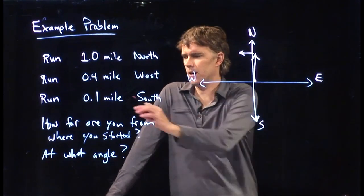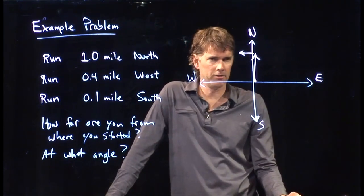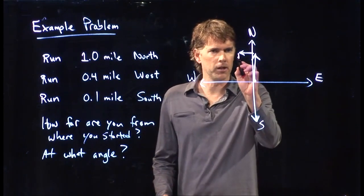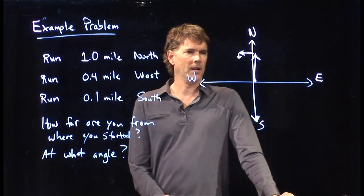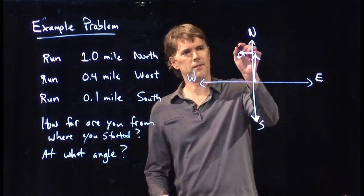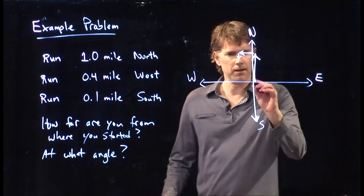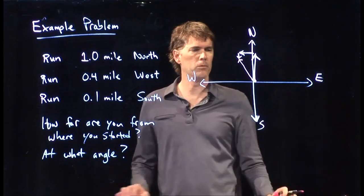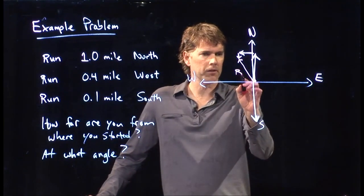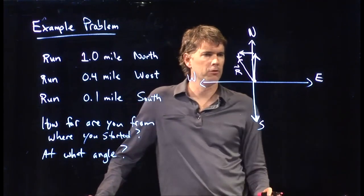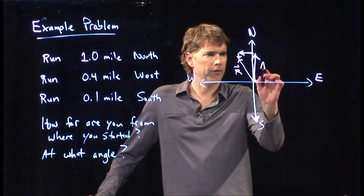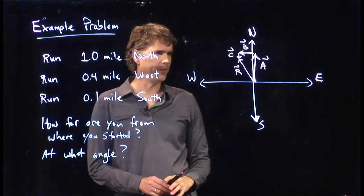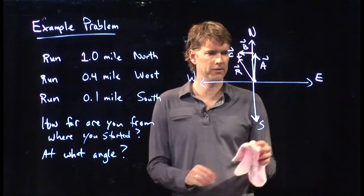Then we run only 0.1 miles south — a smallish little arrow like so. Our movement looks like that: north, west, south. We need to find this distance here, how far we are from where we started. If that resultant vector is R, let's call the first one A, the second B, and the third C, and now we add them up.